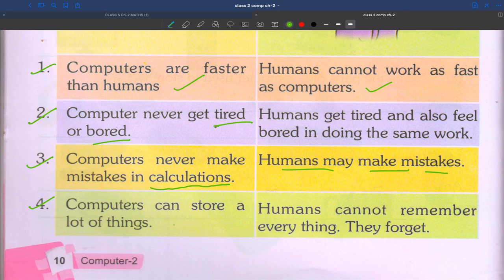Fourth point: computers can store a lot of things. Humans cannot remember everything. They forget.